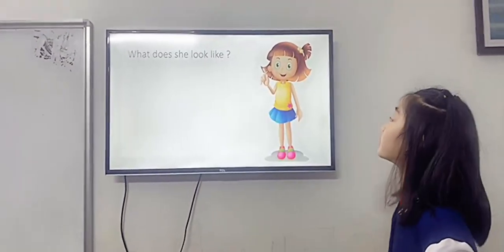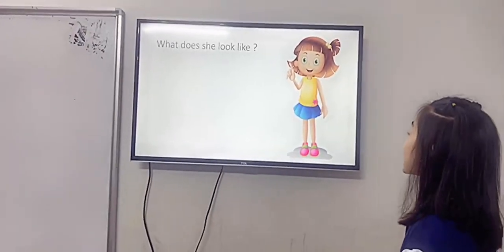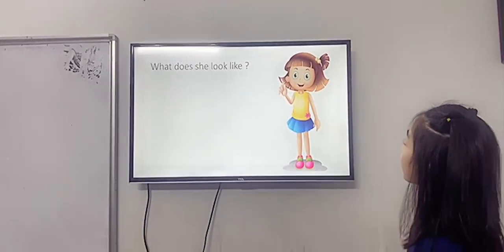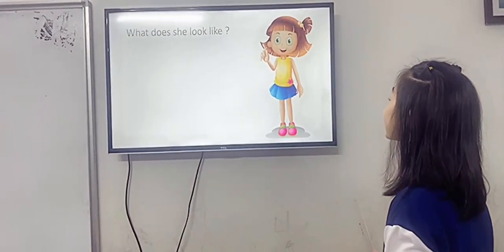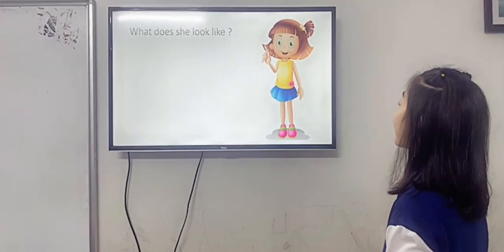Now, look at the girl and tell me what does she look like and then let's describe about her. He has green eyes. He has brown hair.